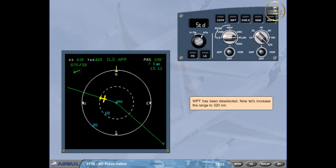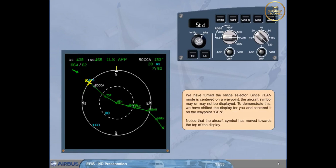We have turned the range selector. Since plan mode is centered on a waypoint, the aircraft symbol may or may not be displayed. To demonstrate this, we have shifted the display and centered it on the waypoint Gulf Echo November. Notice that the aircraft symbol has moved towards the top of the display.